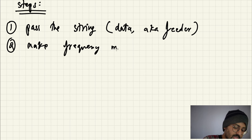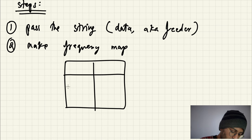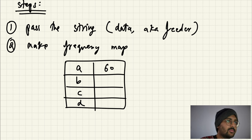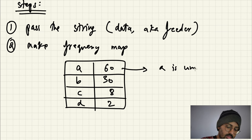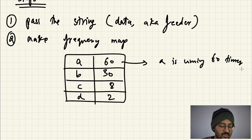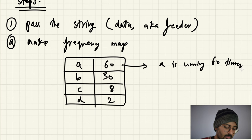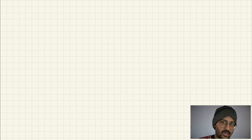For example, in the frequency map: A is coming 60 times, B is coming 30 times, C is coming 8 times, D is coming 2 times. So the frequency map is built. In this video, we're actually making a program where you will be able to send encoded messages to your friend.